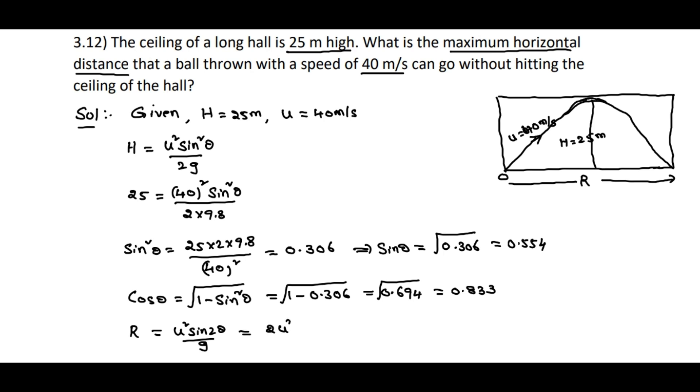That is equal to 2u² sin θ cos θ divided by g. That is equal to 2 times 40² times sin θ (0.554) times cos θ (0.833) divided by g value 9.8. After simplification we will get 150.7 meters. So this is the horizontal range covered by the projectile as per the given data.